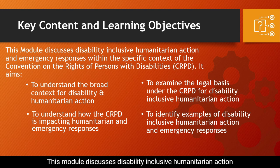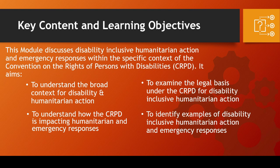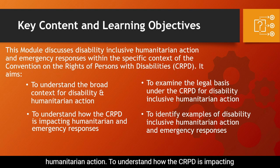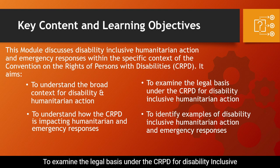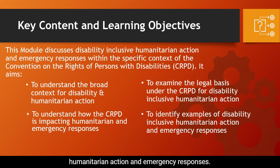Key Content and Learning Objectives. This module discusses Disability Inclusive Humanitarian Action and Emergency Responses within the specific context of the Convention on the Rights of Persons with Disabilities (CRPD). It aims to understand the broad context for disability and humanitarian action, how the CRPD is impacting humanitarian and emergency responses, the legal basis under the CRPD for Disability Inclusive Humanitarian Action, and to identify examples of Disability Inclusive Humanitarian Action and Emergency Responses.